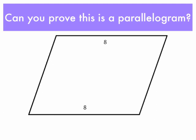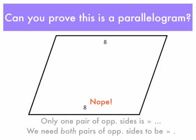How about this figure? It's pretty straightforward. We only have one pair of congruent opposite sides. We would need both pairs to be congruent.